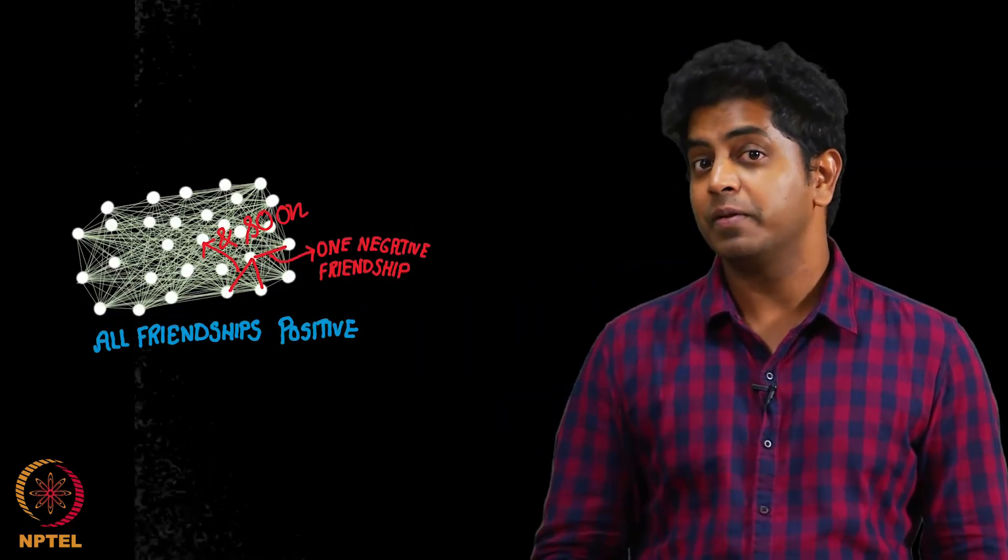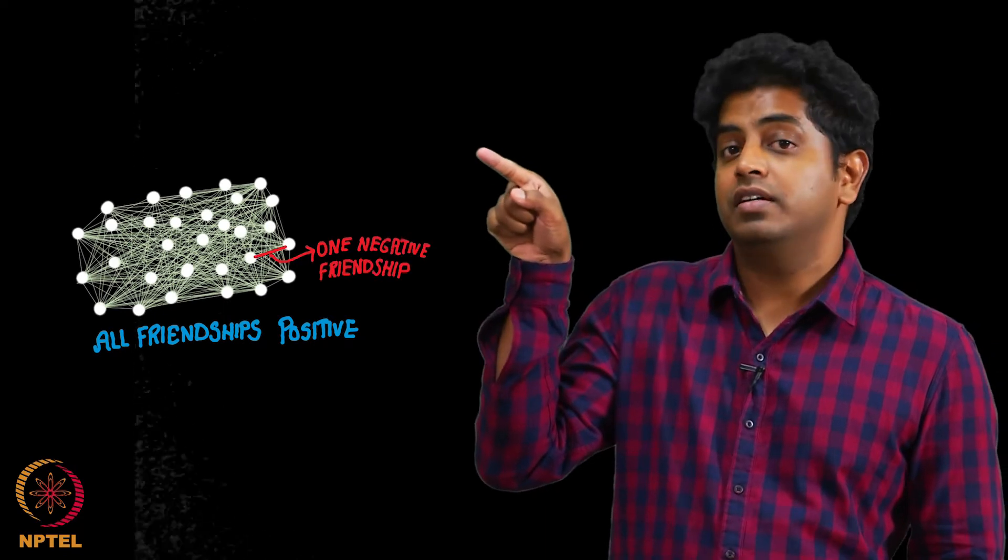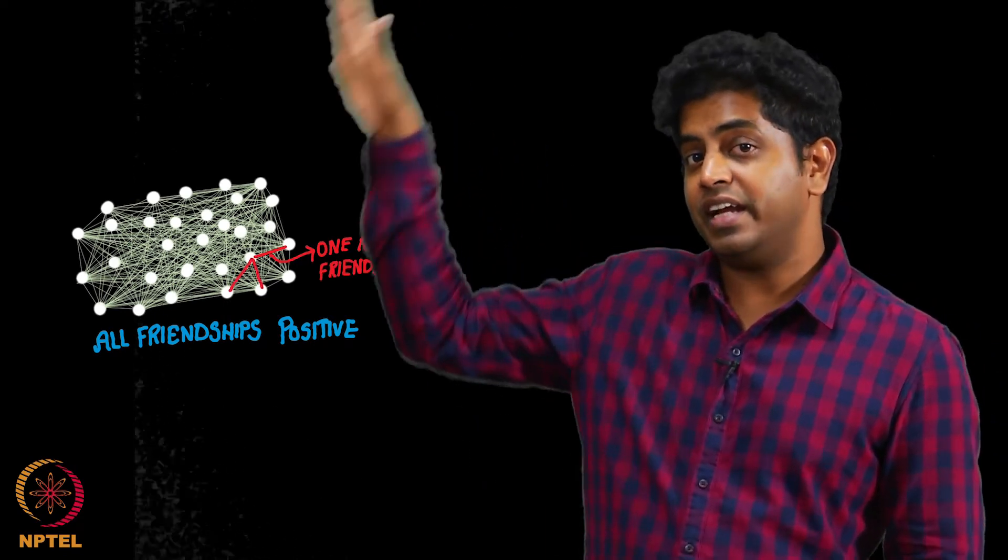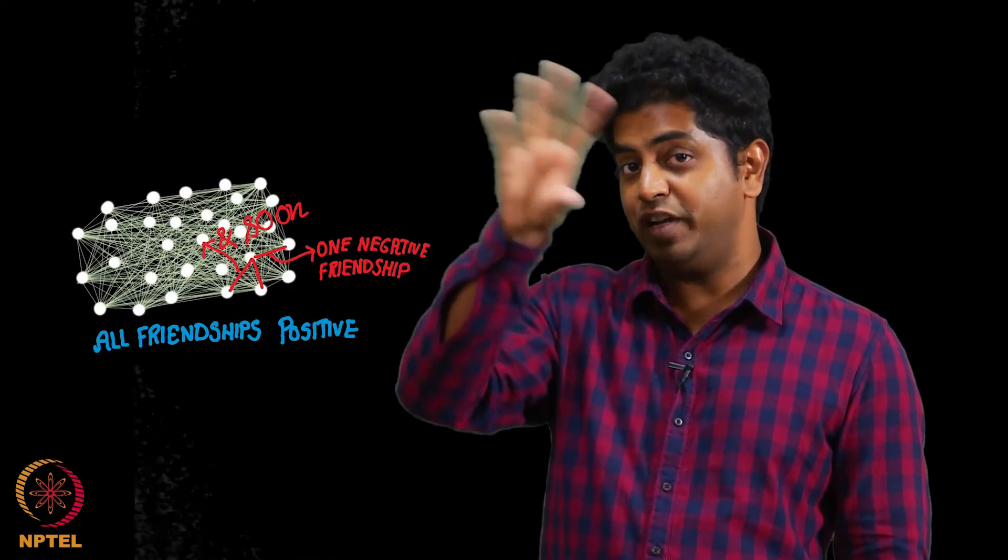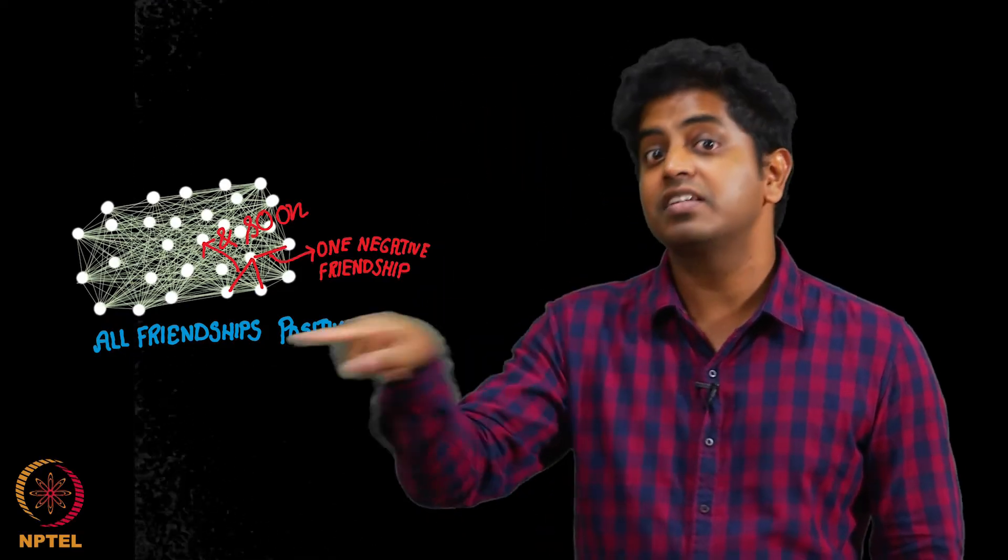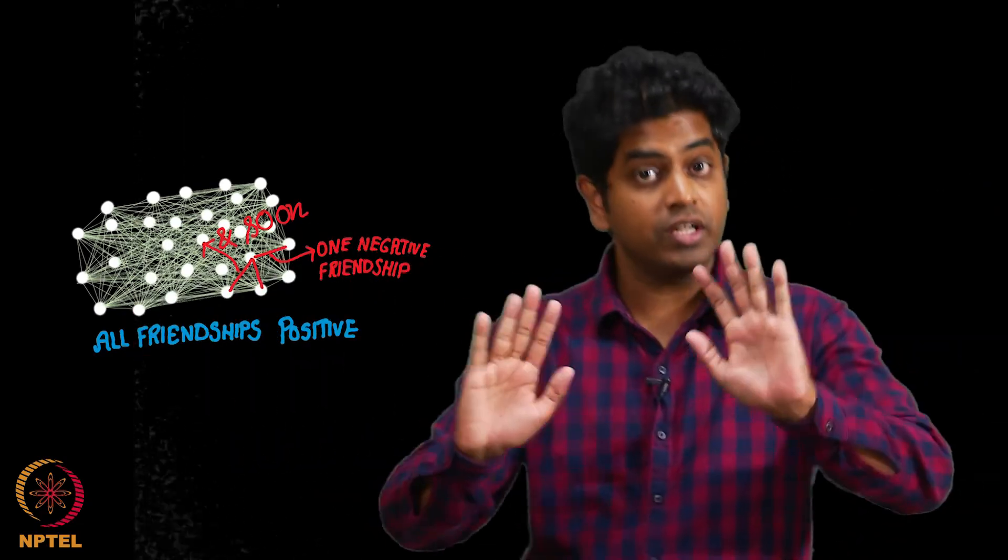My curd milk example is not actually true here. Why? Introducing one negative friendship will result in negative friendships, but then if there is a triangle with three negative friendships that will result in positive friendship. So it is not really true that introducing one negative friendship results in all negative friendships. It may not really be true.